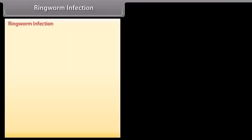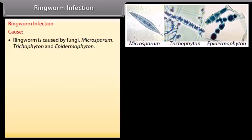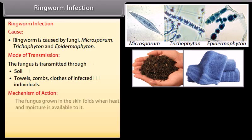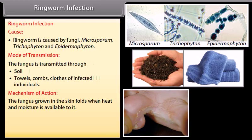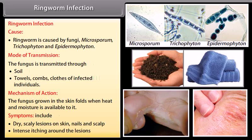Ringworm infection is caused by fungi — Microsporum, Trichophyton, and Epidermophyton. The fungus is transmitted through soil, towels, combs, and clothes of infected individuals. The fungus grows in the skin folds where heat and moisture are available. Symptoms include dry, scaly lesions on the skin, nails and scalp, and intense itching around the lesions.